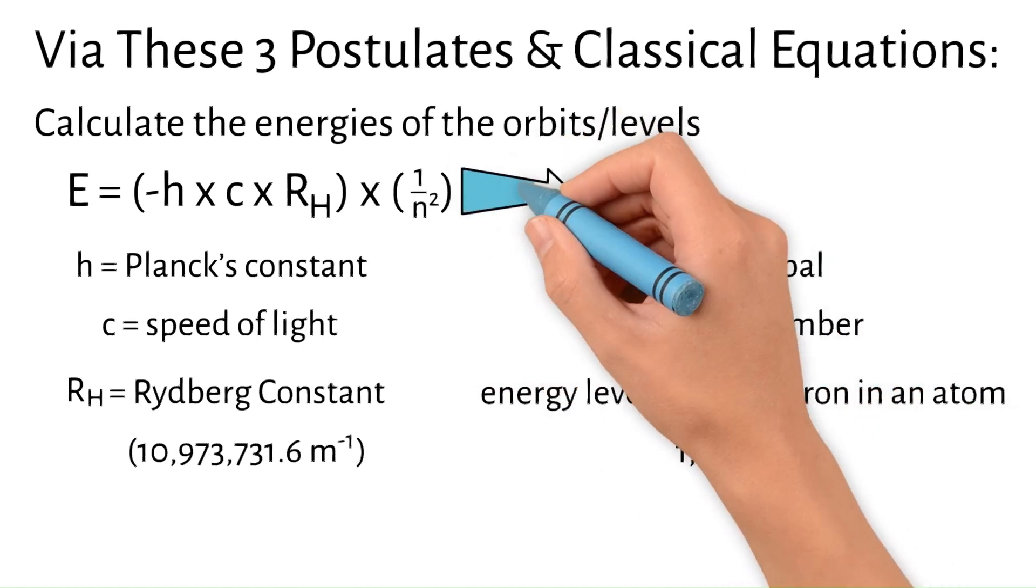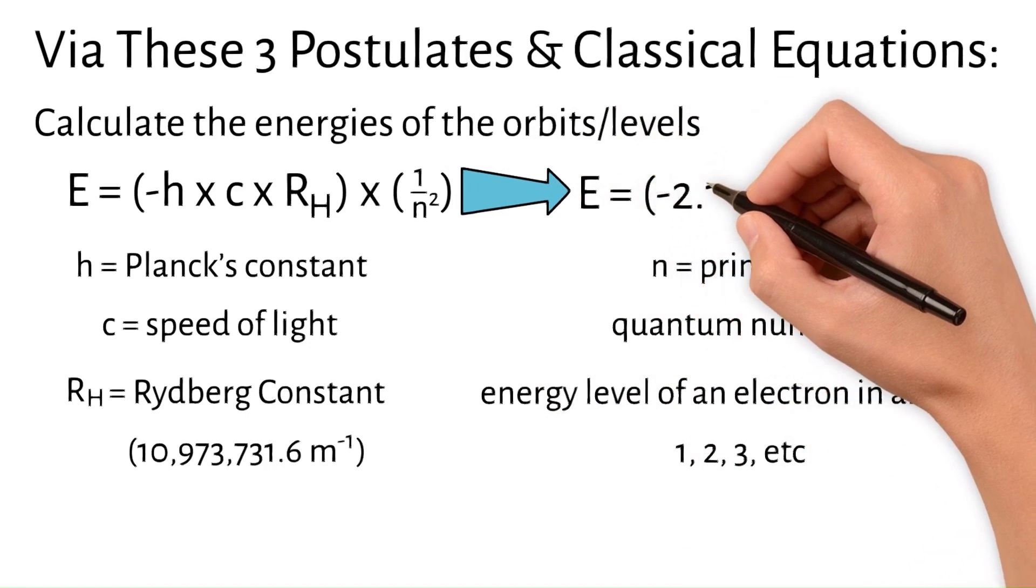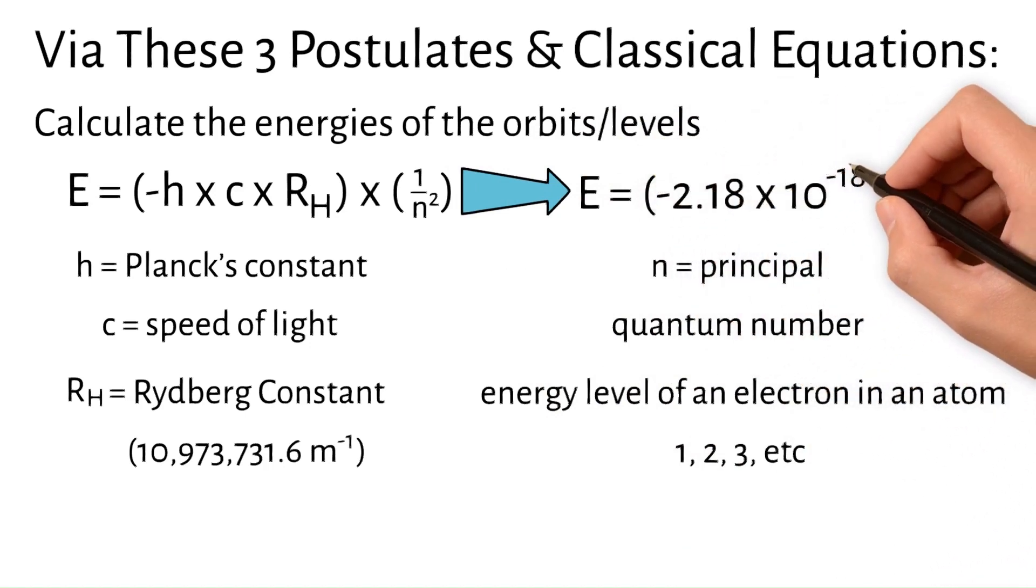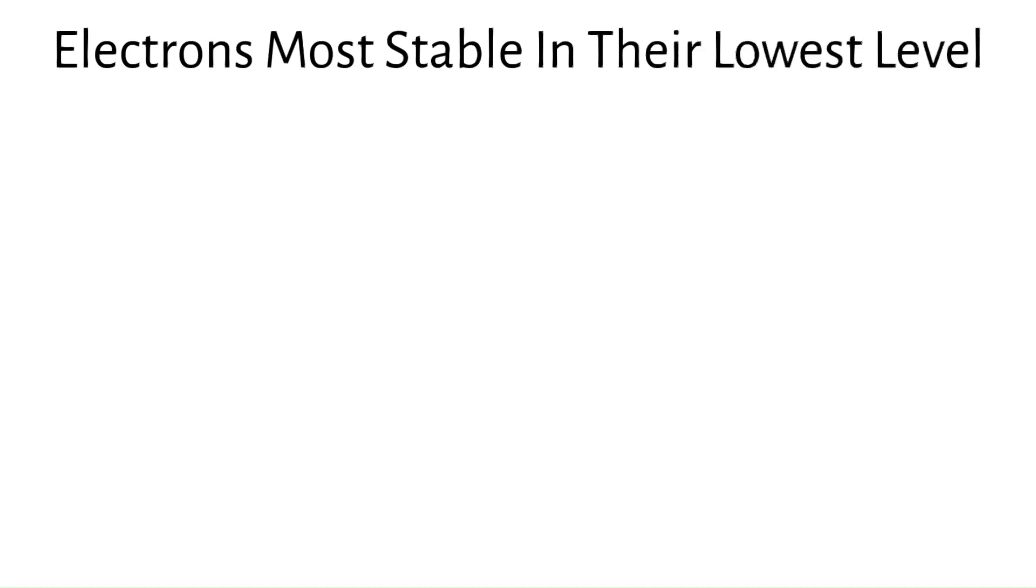This equation simplifies to E equals negative 2.18 times 10 to the negative 18th joules times 1 divided by n squared. This equation ultimately led to our understanding that electrons are most stable in their lowest level, closest to the nucleus.